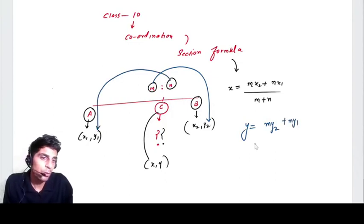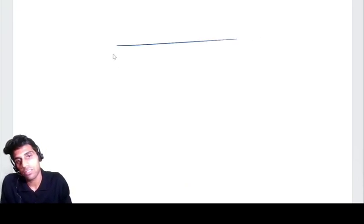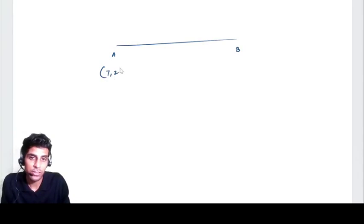Let's take one question with which you can easily understand. For example, if A and B are two coordinates, say 7 comma 2 and 9 comma 12, and it is divided by C coordinate in 2 is to 1.